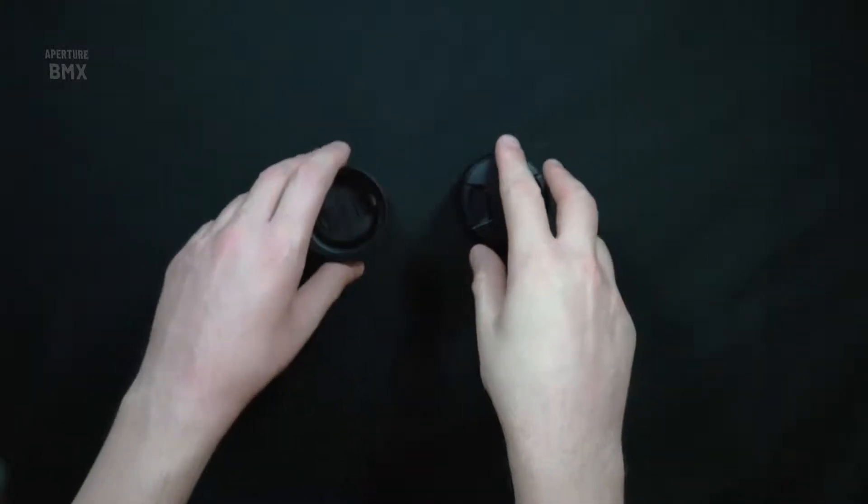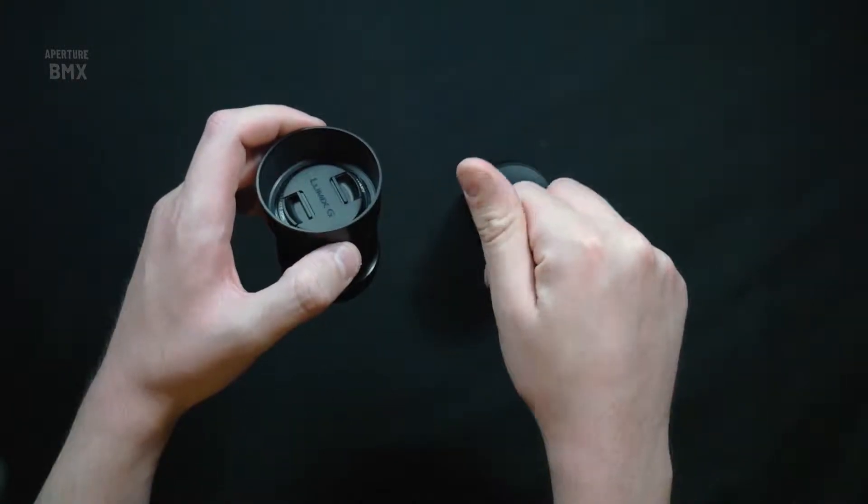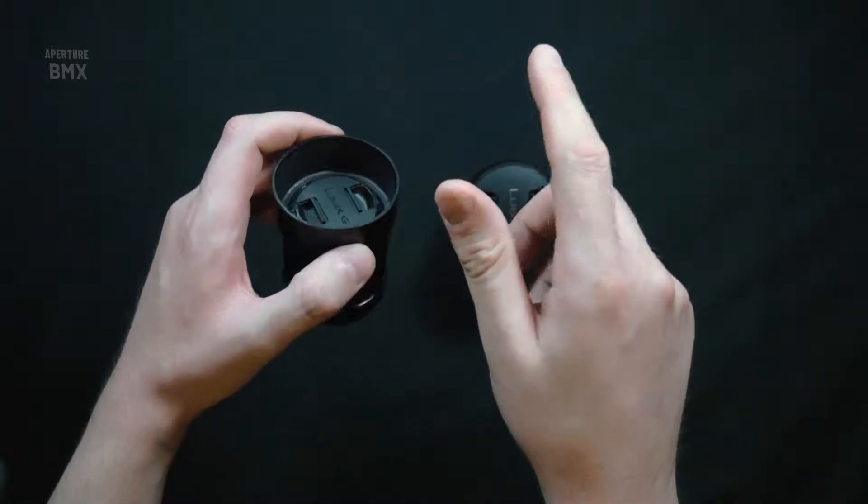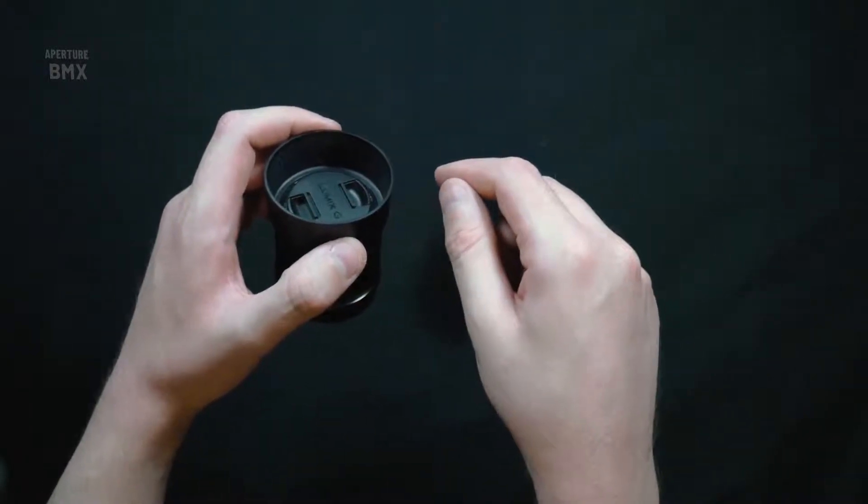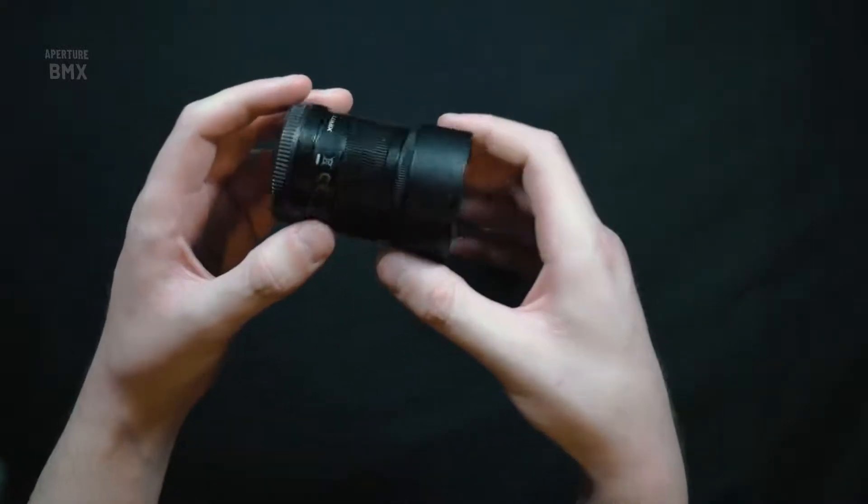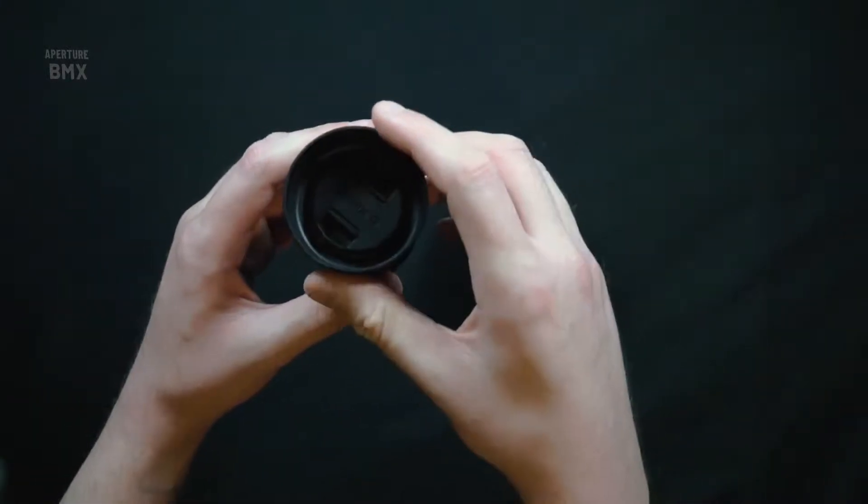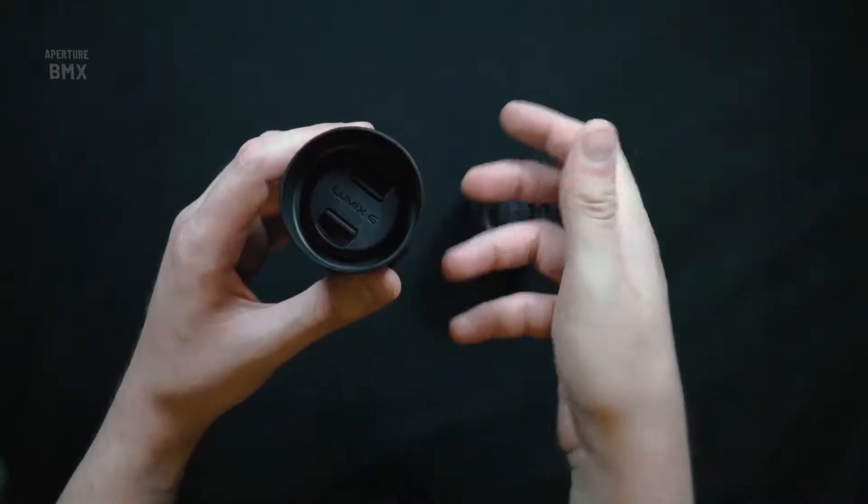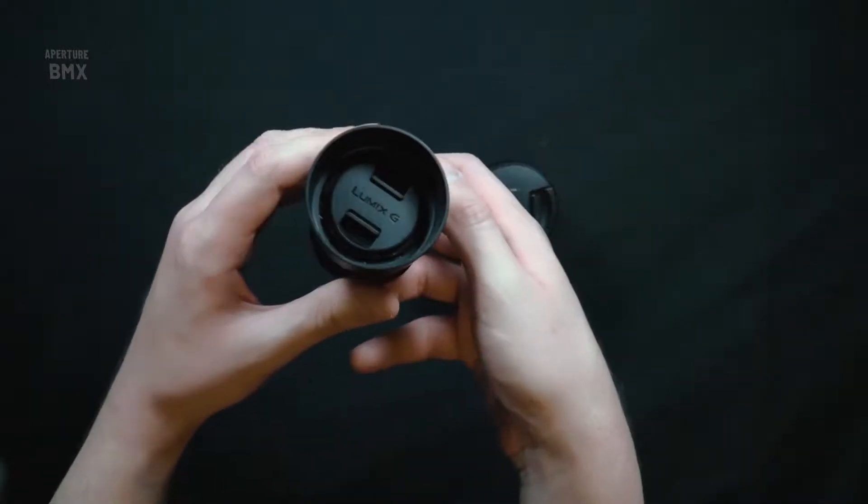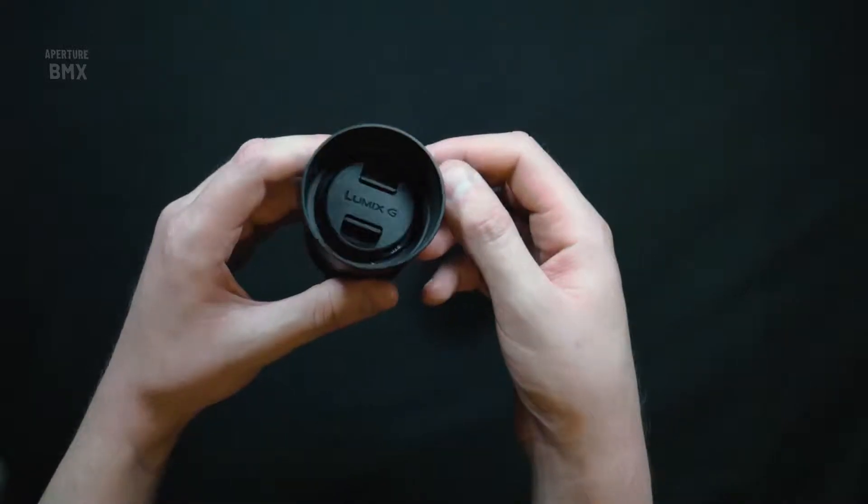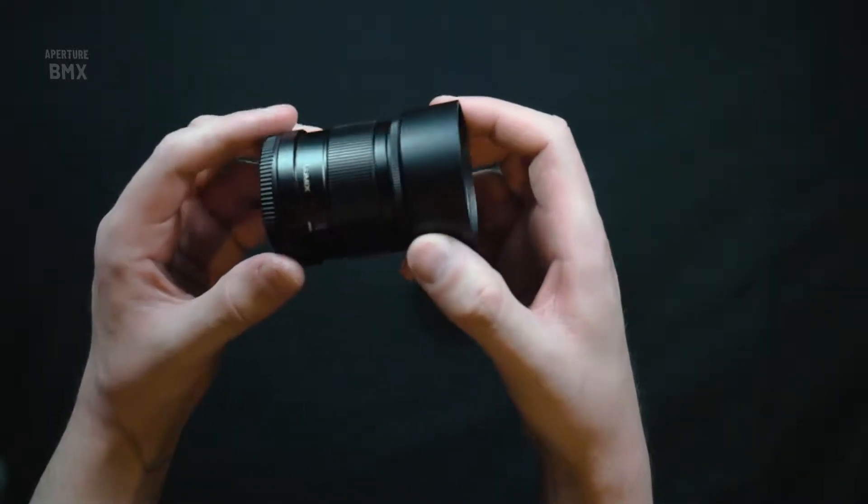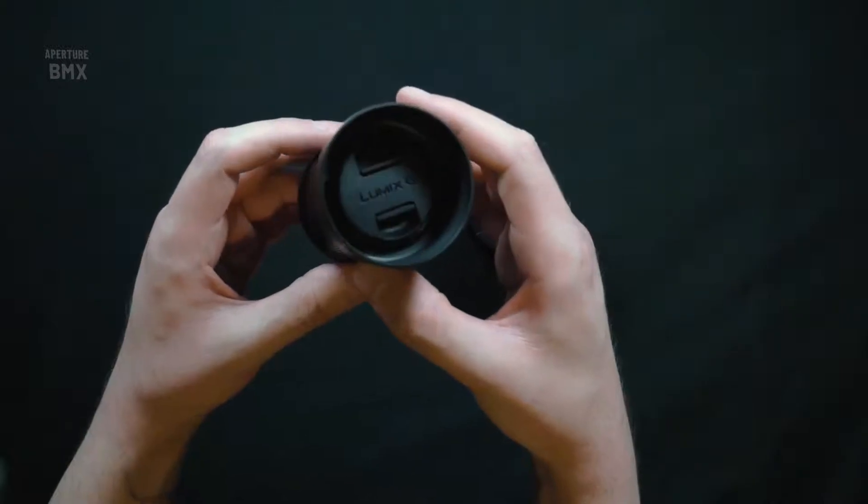These are the two other lenses that I have. The one in the camera at the moment, which is filming this, is the kit lens—the 14 to 42 millimeter. However, late last year I wanted a lens with a wider aperture to let more light in so I could film at nighttime when racing under the lights.